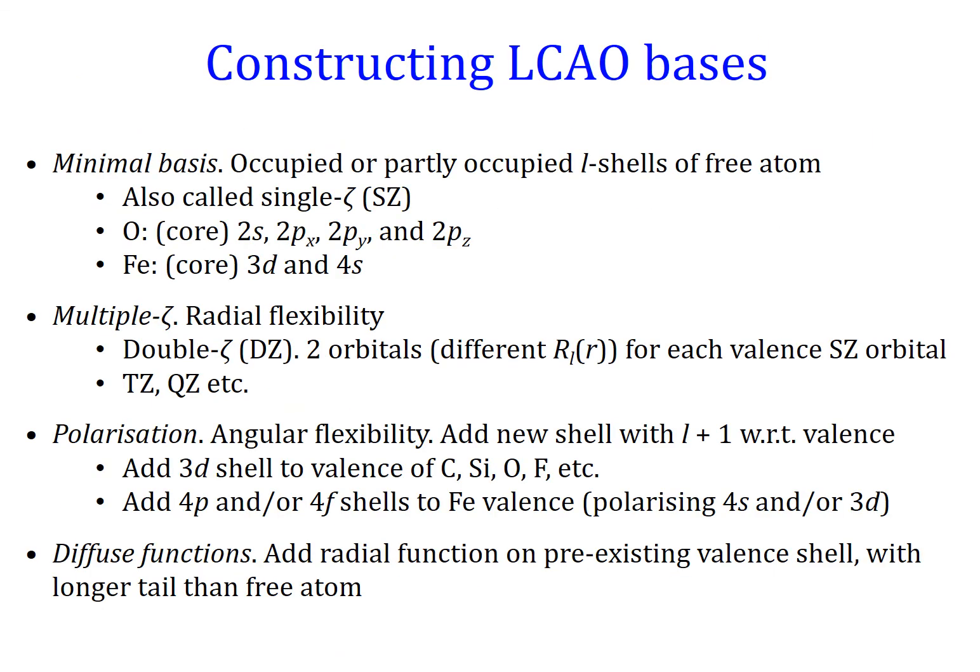To construct the basis we normally start with the minimal basis: the set of occupied or partly occupied l-shells of the free atom. Here are examples of a single-zeta or minimal basis for oxygen and iron. Radial flexibility is then increased by doubling the basis — double-zeta — meaning two orbitals of different radial shapes for each previously defined shell, acting as independent basis functions. One can then go to triple-zeta, quadruple-zeta, and so on. In addition, angular flexibility is increased by introducing polarization orbitals — shells with angular momentum one step larger than the largest angular momentum in the valence. One can also introduce diffuse functions that decay more slowly than in the free atom.